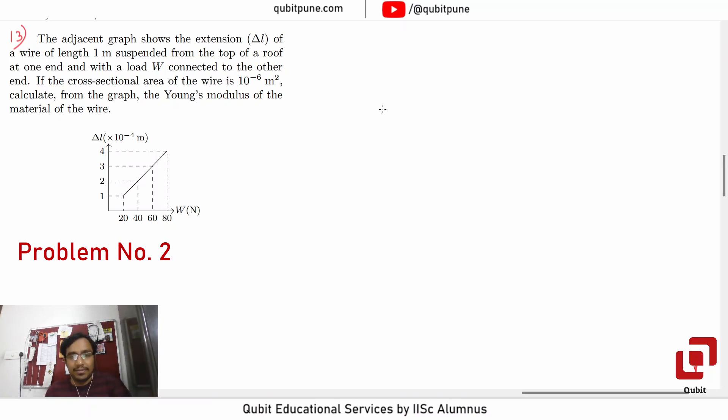Let's first go for Young's modulus, which is a ratio of stress to strain. So stress is force by area, and this is L upon delta L.